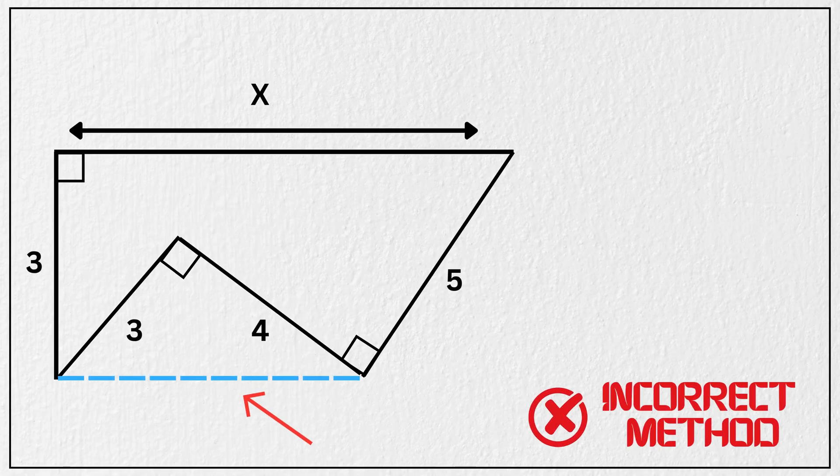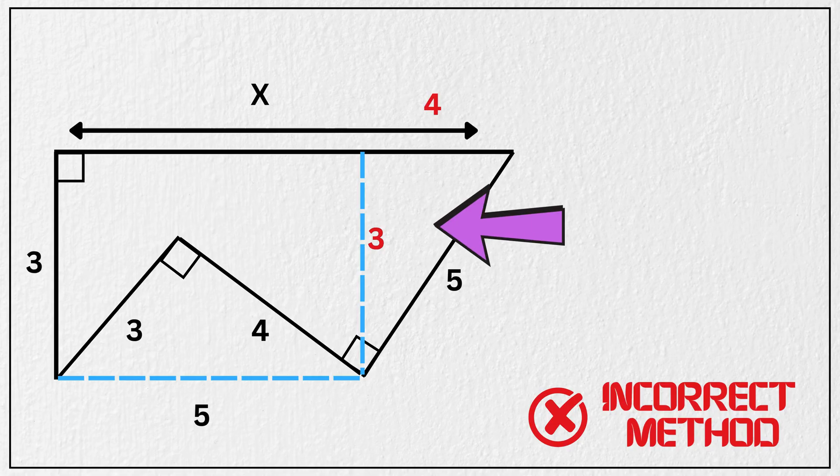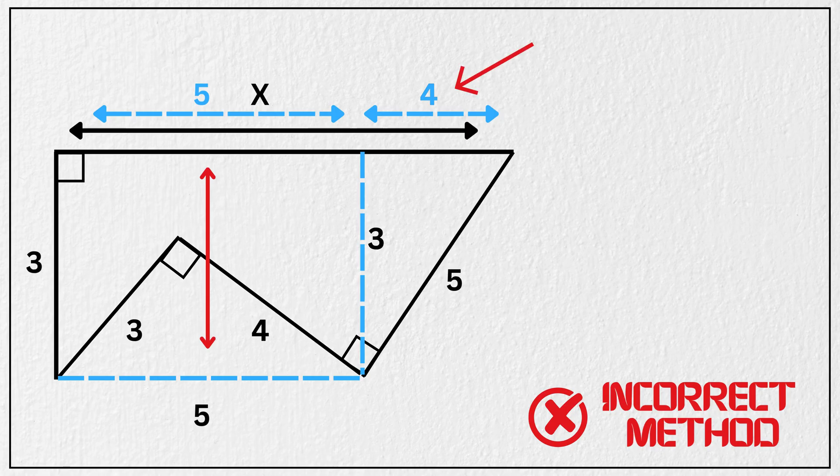They draw this imaginary line and say this triangle with legs of 3 and 4 is a 3-4-5 triangle, so the hypotenuse is 5. Then they draw perpendicular from here and parallel to this side, making the vertical leg of this triangle to be 3, which gives them another 3-4-5 triangle. So they copied 5 to this from here, added the extra 4 from here, and concluded that X is equal to 9.